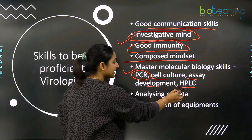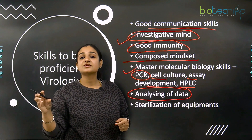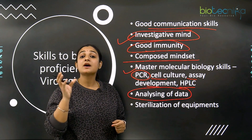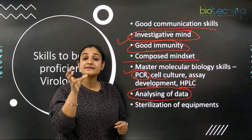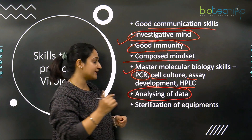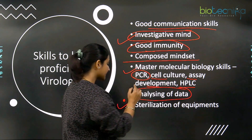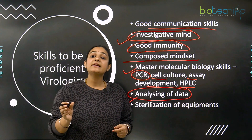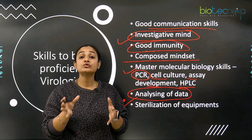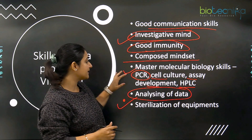The next skill is analysis of data. After doing all the research and analysis, he has to come to a conclusion about what the data represents and interpret those data. The next skill is sterilization of equipment — as a virologist, you will be working in the lab for longer periods and you should know how to sterilize and keep that equipment very clean.